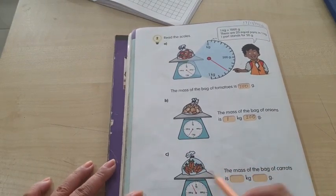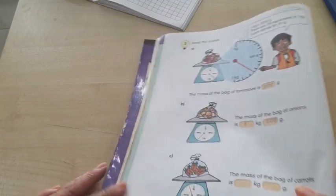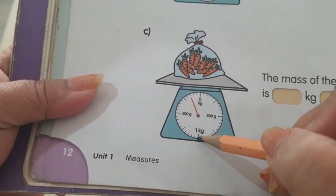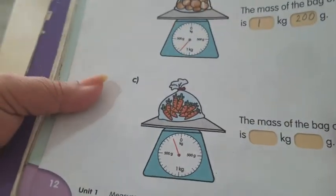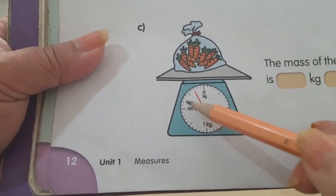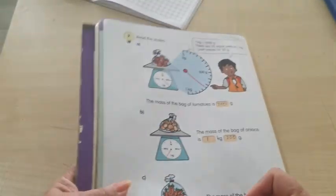Next, C. The mass of the bag of carrots. Now look at the scale carefully. Where does it go? It is past 1 kilogram, so you put here 1 kilogram. This scale is total 2 kilograms. So this is past 1 kilogram, so you put here 1.